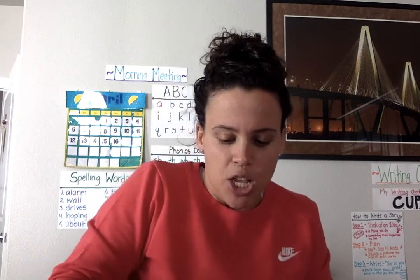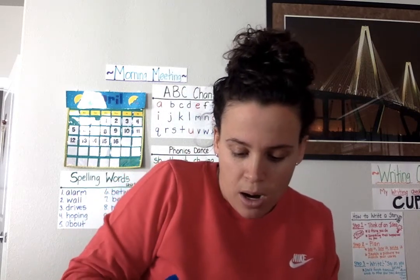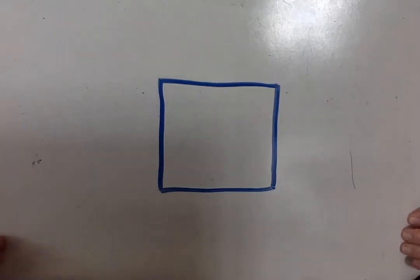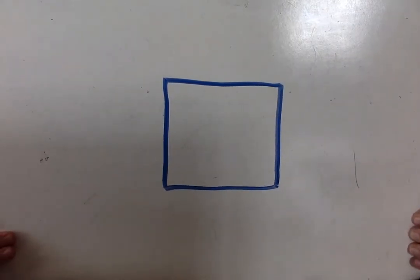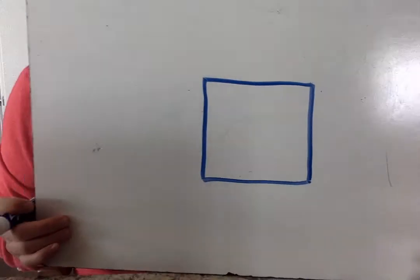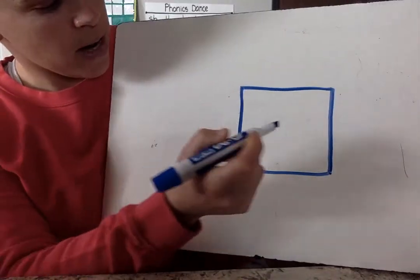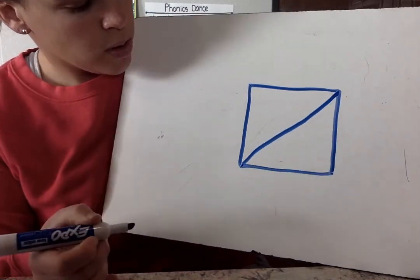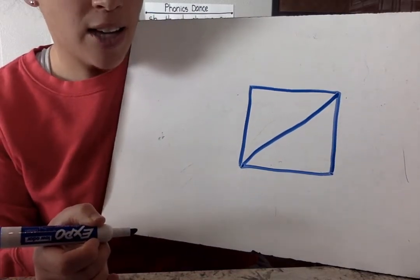So take a square. And you can draw it out on paper or your whiteboard. Take a square. What shapes could you use to make a square? Well, I look at it right here and I can go, oh. I can do two triangles.